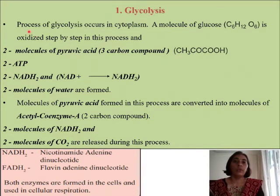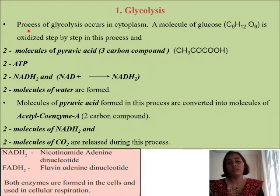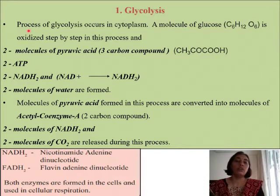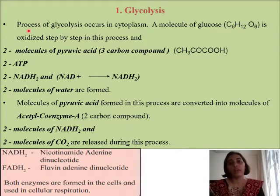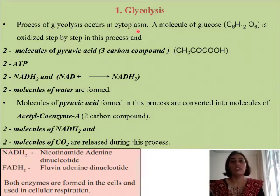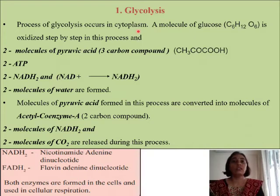Glycolysis involves a very long series of chemical reactions, but here we are going to study only some important steps of glycolysis. The very first important point is that the process of glycolysis occurs in the cytoplasm. This is very important — where is glycolysis taking place? It is going to take place in the cytoplasm part of the cell.